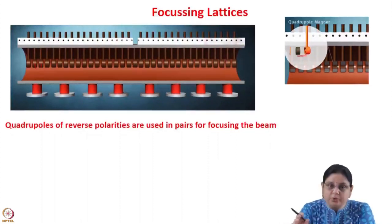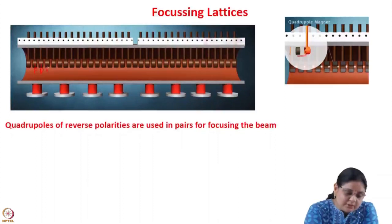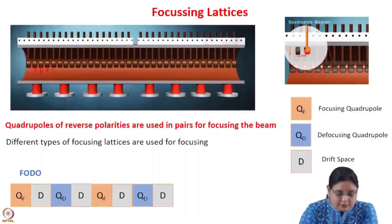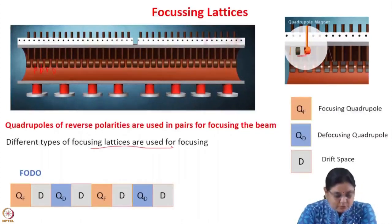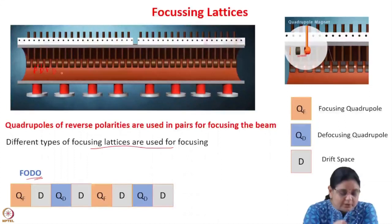Inside these drift tubes, quadrupoles are used for focusing the beam in the transverse direction. You have to use a combination of two quadrupoles so that you can focus in both directions. So there is a focusing quadrupole, then a defocusing, then another focusing and then a defocusing quadrupole. This is known as a FODO lattice, where there is a focusing quadrupole followed by a drift space, followed by a defocusing quadrupole, then a focusing, defocusing, and so on.